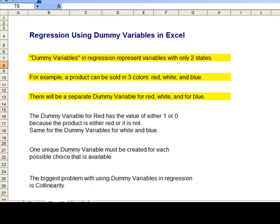The dummy variable for red can only have the values of one or zero because the product is either red or it's not, and the same with the other two dummy variables for white and blue. One unique dummy variable must be created for each possible choice that's available.